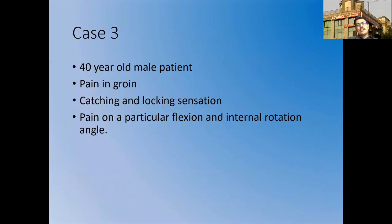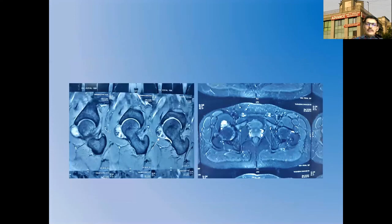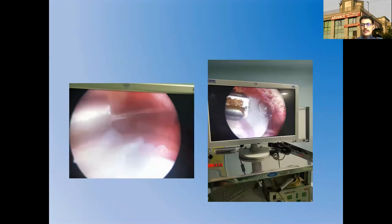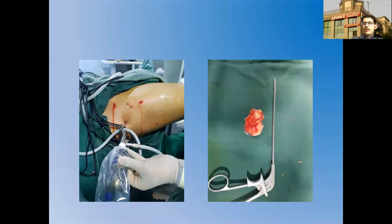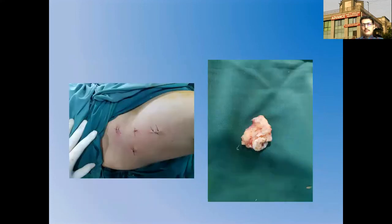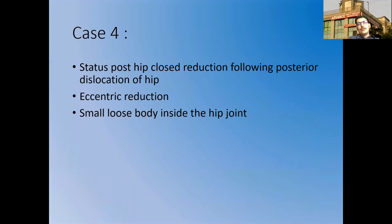Case 3 is a 30-to-40-year-old male presenting with groin pain, catching, and locking sensation at specific flexion and internal rotation angles. Investigation revealed a large synovial pathology in the peripheral compartment anteriorly — a loculated, space-occupying lesion blocking movement during flexion and internal rotation. The pathology was removed arthroscopically and sent for histopathology, which was suggestive of localized PVNS.